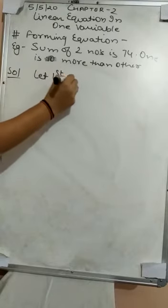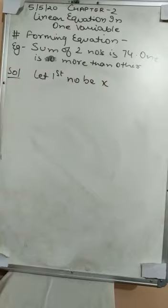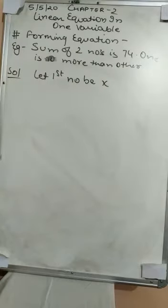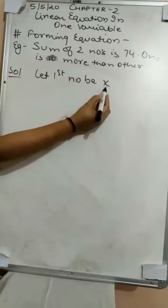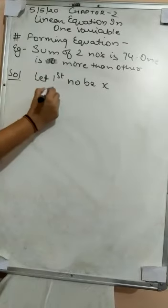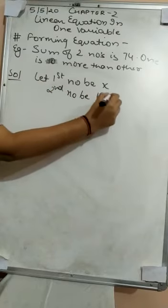Whatever is not given, what do we do? We take it as x. Let the first number be x. Now, what they are saying — one number is 10 more than the other. Then the second number will be 10 more than the first. Whenever 'more' is given, it means we have to add that amount. Here 10 more is given, so we add 10 to x. So the second number is x plus 10.